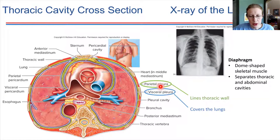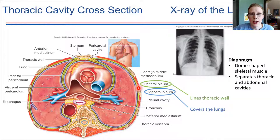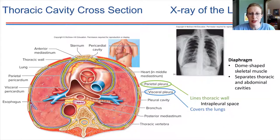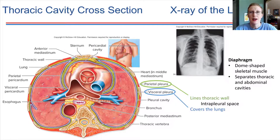The visceral pleura is a membrane that covers just the lungs. These two pleura are side by side, and there is technically a space between them called the intrapleural space. This is going to be very important when it comes to pressure control of the lungs.